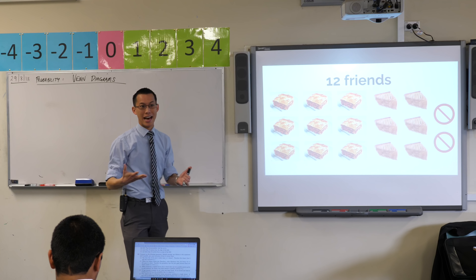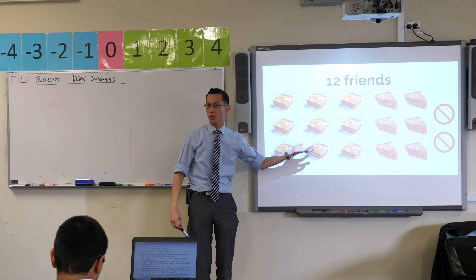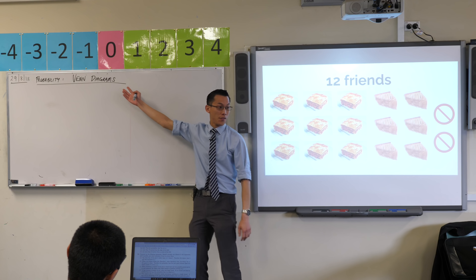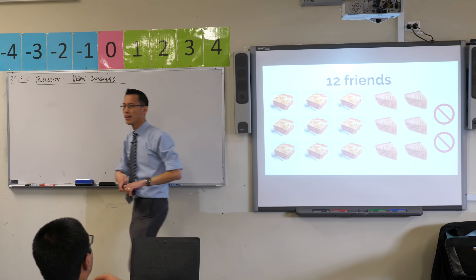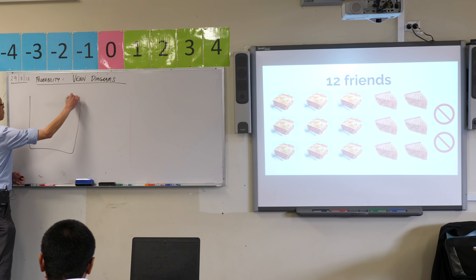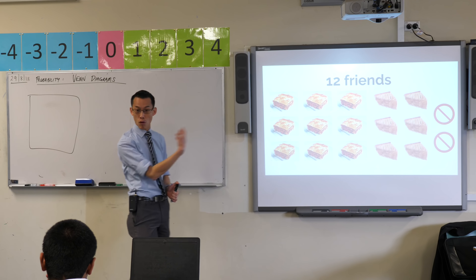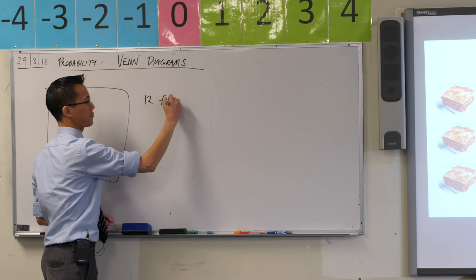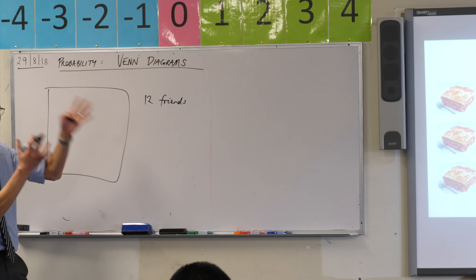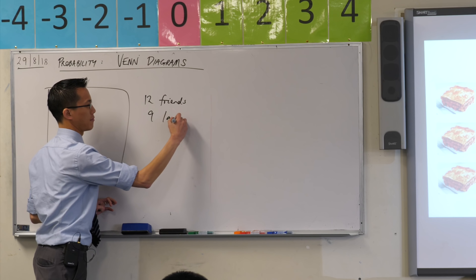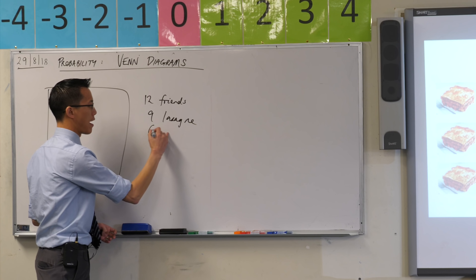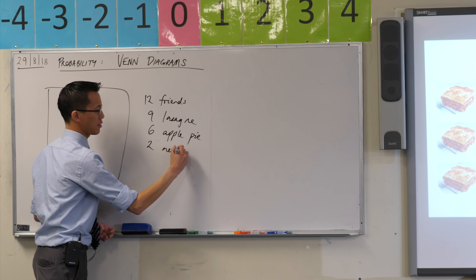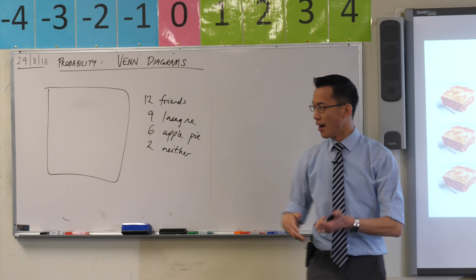When I say 'overlap' — the idea that some people ate lasagna and also ate apple pie — we represent that diagrammatically in the area of a Venn diagram that quite literally overlaps. So let's try to unpack what's going on here. Maybe now you want to draw yourself some space and write down with me the essential details: there are 12 friends in total, nine ate lasagna, six ate apple pie, and two ate neither.